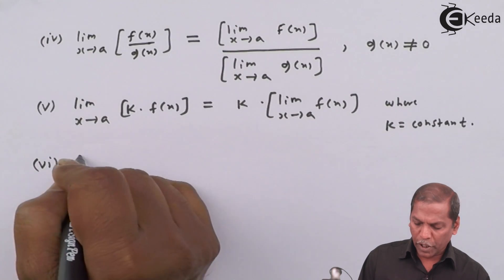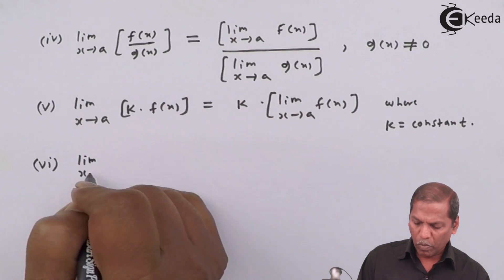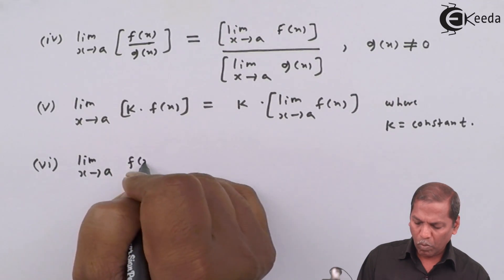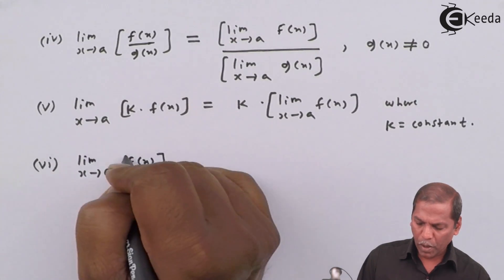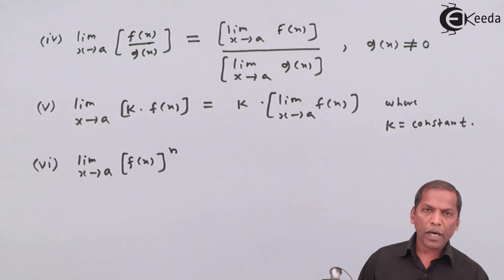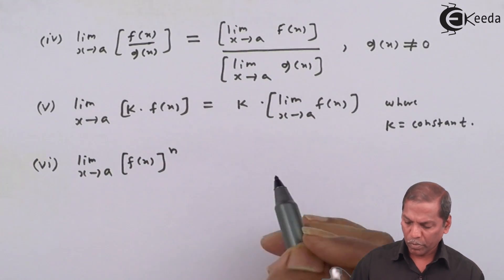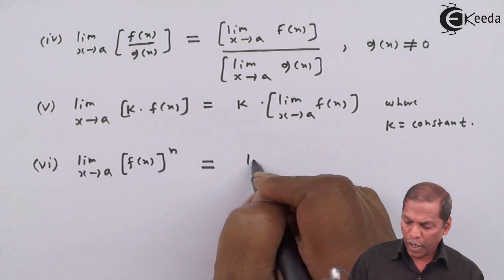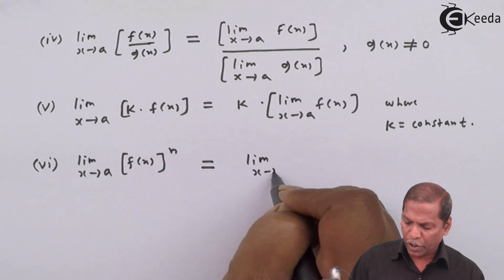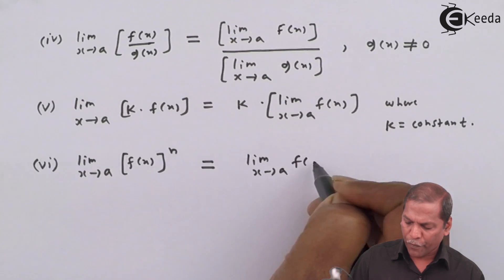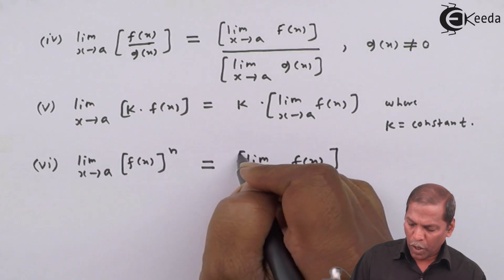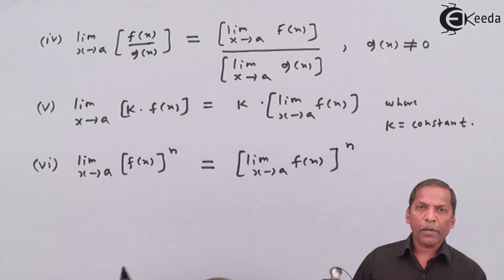Number 6: limit x tends to a f of x whole bracket raise n, that equal to limit x tends to a f of x whole bracket raise n.